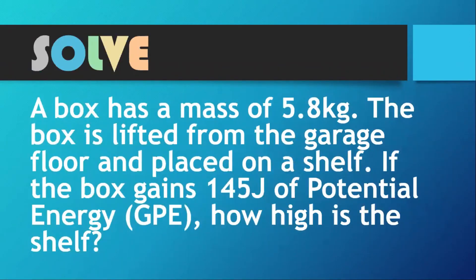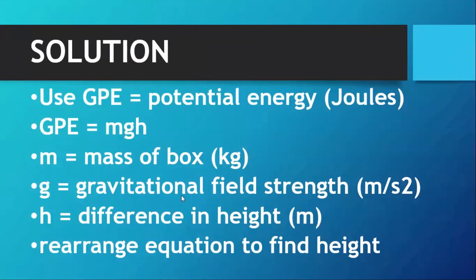Let's solve a problem: a box has a mass of 5.8 kilograms. The box is lifted from the garage floor and placed on a shelf. If the box gains 145 joules of potential energy, how high is the shelf? First, identify the given values: mass = 5.8 kg, gravitational potential energy = 145 J, and we are looking for the height.